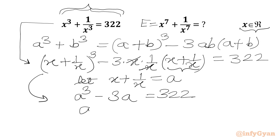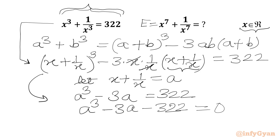Taking all terms to the LHS: a³ − 3a − 322 = 0. This is a cubic equation in a. We will use the rational root theorem and synthetic division. The factors of the constant 322 include ±1, ±2, ±7, ±14, and so on.